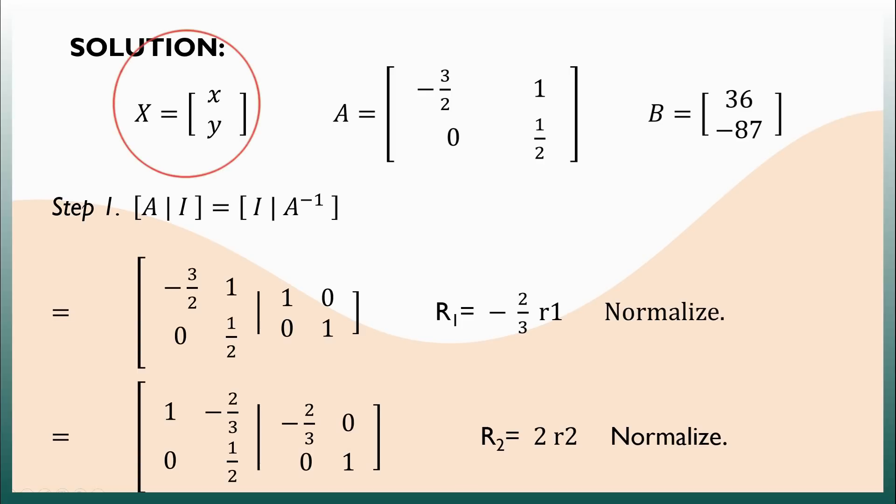So, the variable matrix will feature x and y. The coefficient matrix derived from the coefficients contains negative 3 halves, 1, 0, and 1 half. We have 0 here in row 2 because there is no variable x in the second equation. Third, the constant matrix, which is derived from the constants, has 36 and negative 87. Now that we have identified them, let's start breaking down the solution.